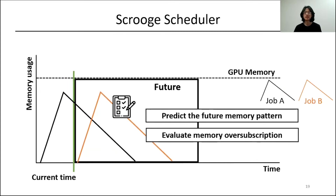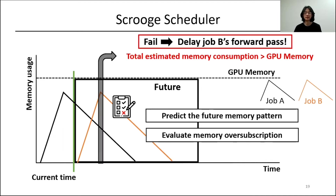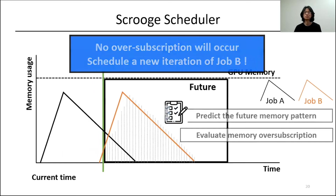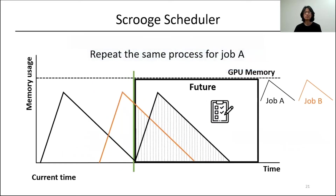After the time delay, Scrooge repeats the same scheduling decision process for job B. Again, Scrooge predicts oversubscription, so it delays job B once more. Eventually, Scrooge finds the point that minimizes time delay while not incurring memory oversubscription in the future, and then schedules job B by initiating its new iteration. The same process repeats to schedule the forward pass of job A when it finishes its current iteration.